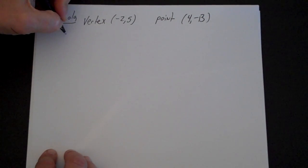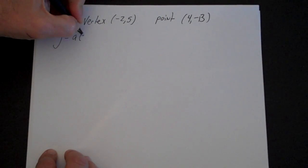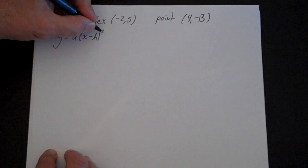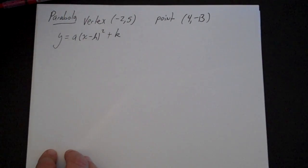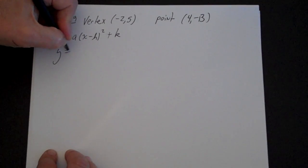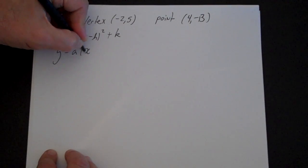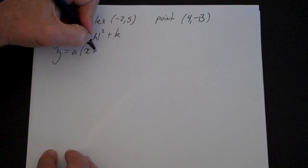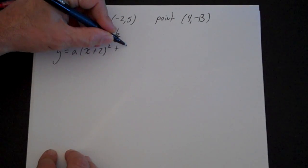So what we need to do first is write down y = a(x - h)² + k. I know h and k because I know the vertex. Let's plug those in. y = a(x + 2)² + 5.